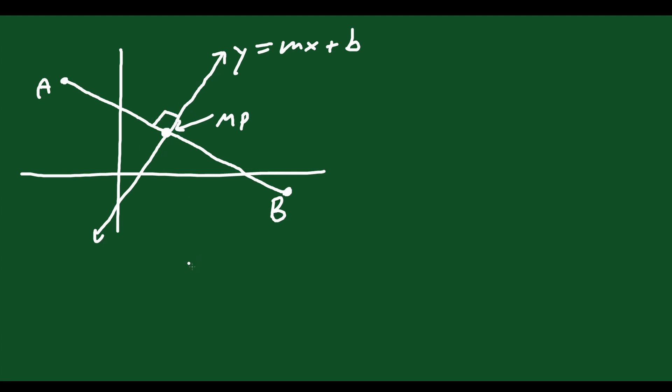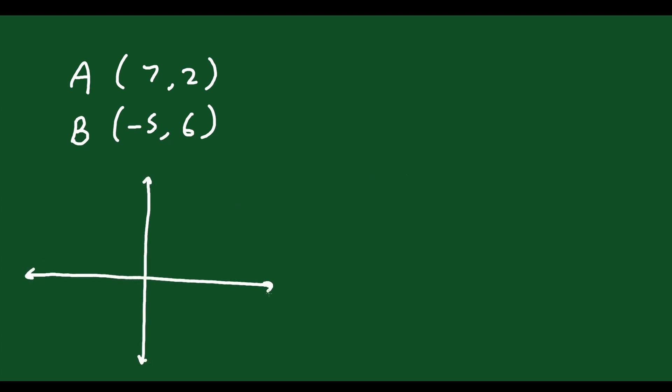Let's take a look at a specific example. Say they give you point A at (7, 2) and point B at (-5, 6). We can sketch this out to help visualize what's happening, although it's not required. So A is somewhere at 7, 2 and B is at negative 5, 6 — up there — and you connect those two together. So that's point A and that's point B.